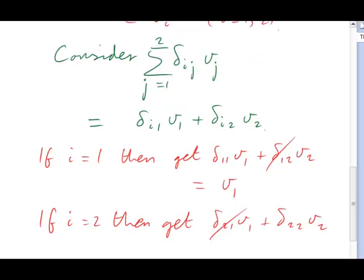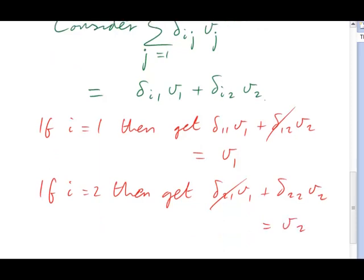On the other hand, if i happens to be 2, then it's now the delta 2,1 term that disappears, and that leaves us delta 2,2 times v2, which is just v2. In both of these cases, the component of v that it singles out is precisely the one labelled by the value of i. When i is 1, we get v1. When i is 2, we get v2.